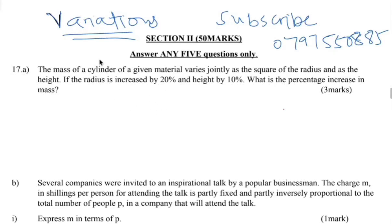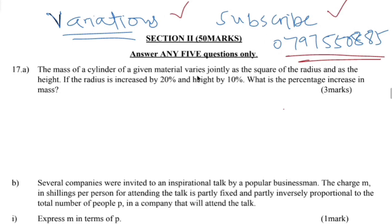Assalamu alaikum warahmatullahi wabarakatuh, welcome all. We are doing Paper 2 Section 2 on the topic of variation. Kindly subscribe to the channel. Question 17: the mass of a cylinder of a given material varies jointly as the square of the radius and as the height. If the radius is increased by 20 percent and the height by 10 percent, what is the percentage increase in mass?